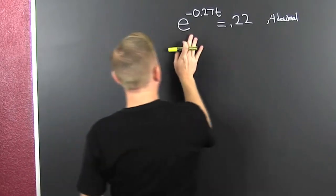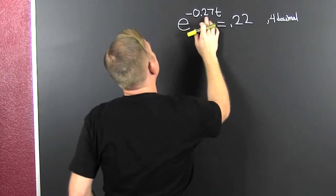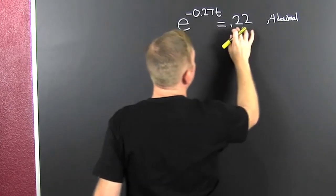I'm up here. If you were left with something like e to the minus 0.27t, and that's equal to 0.22.